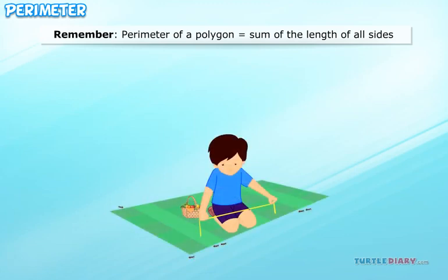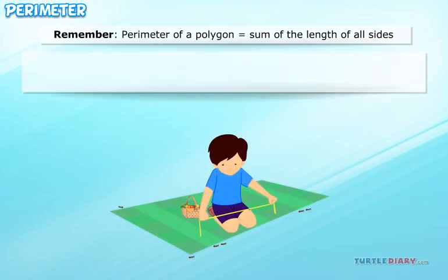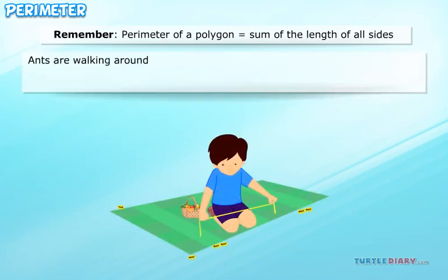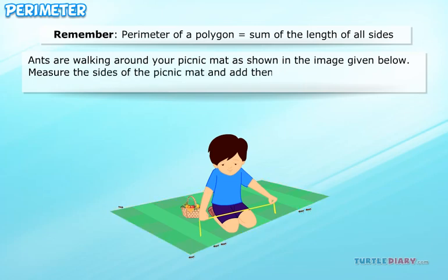Let's look at a few examples. Ants are walking around your picnic mat as shown in the image given below. Measure the sides of the picnic mat and add them to find out how far the ants walked.